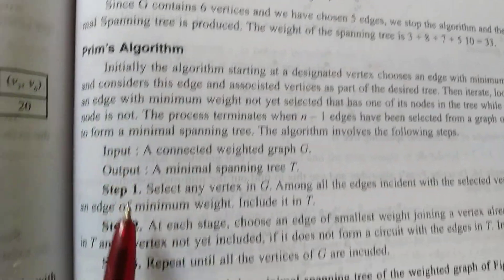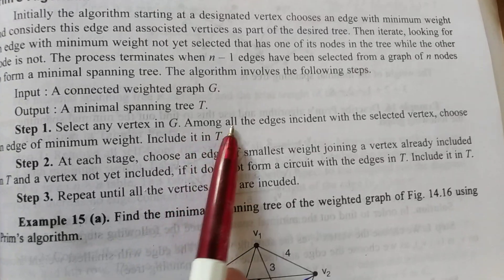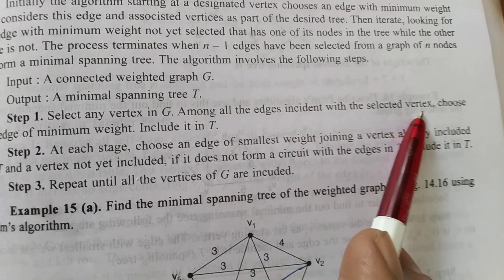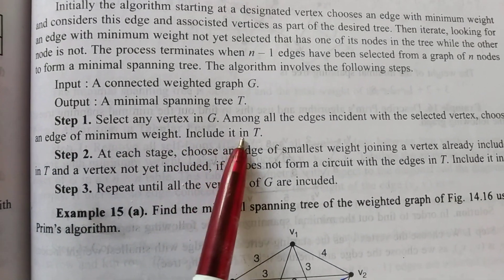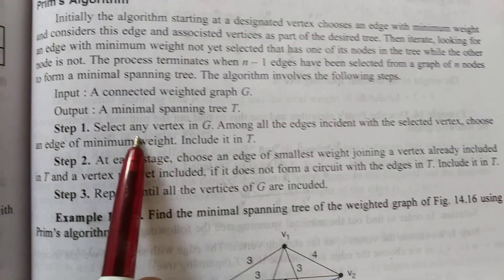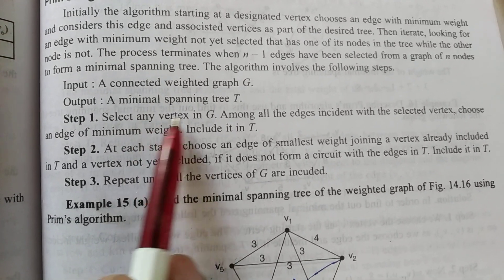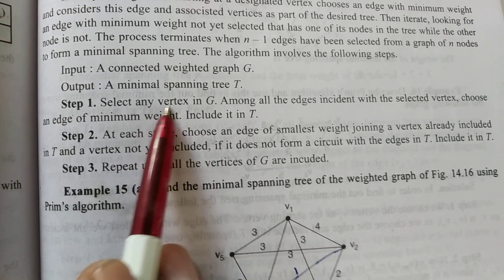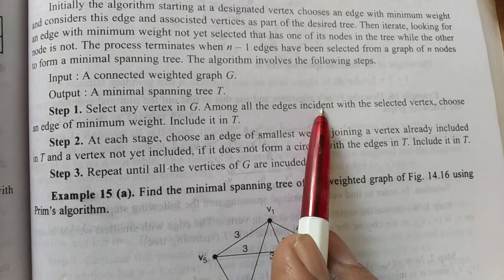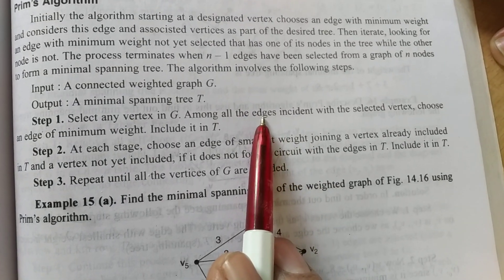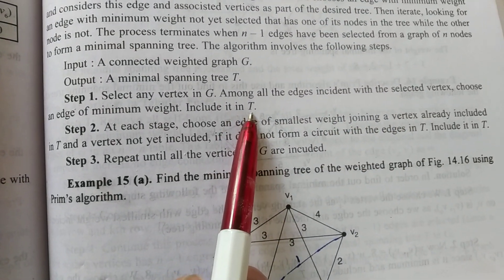According to Prim's algorithm, first step is: select any vertex in the graph G. Among all the edges incident with the selected vertex, choose an edge of minimum weight and include it in tree T. Kruskal algorithm में minimum weight वाले edge से start करते हैं, लेकिन Prim's algorithm में graph G का कोई भी vertex select कर सकते हैं। उस vertex के सारे incident edges में से सबसे कम weight वाले edge को select करके tree में include करिए।